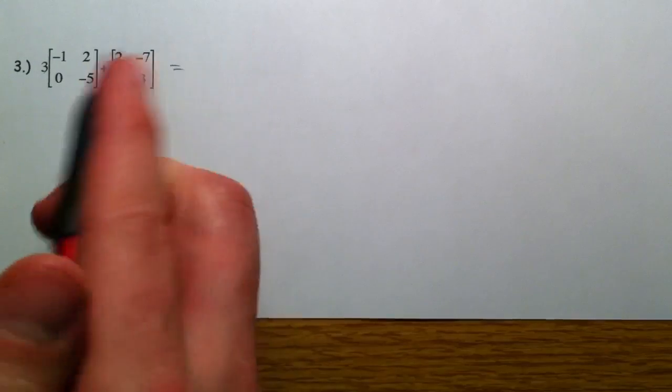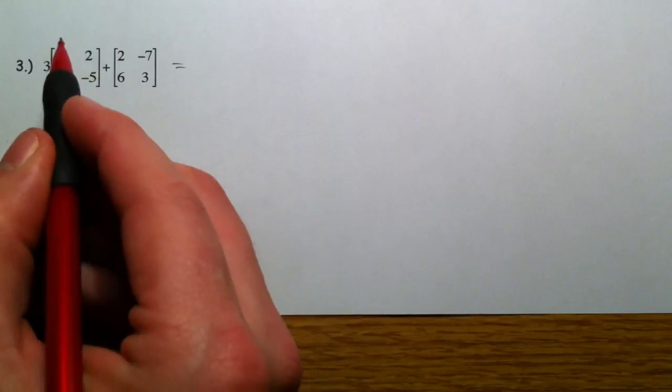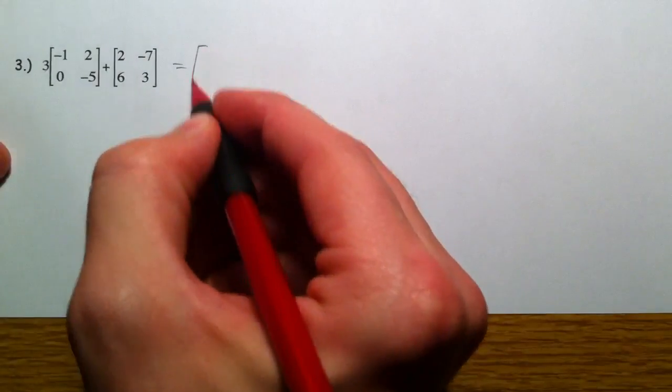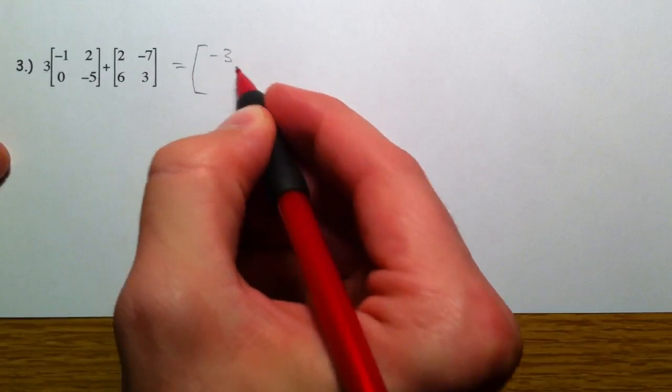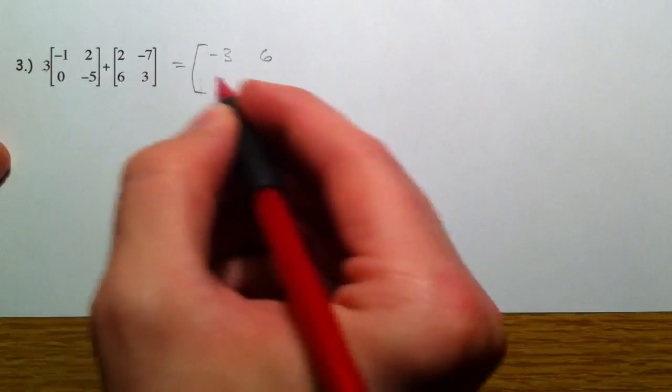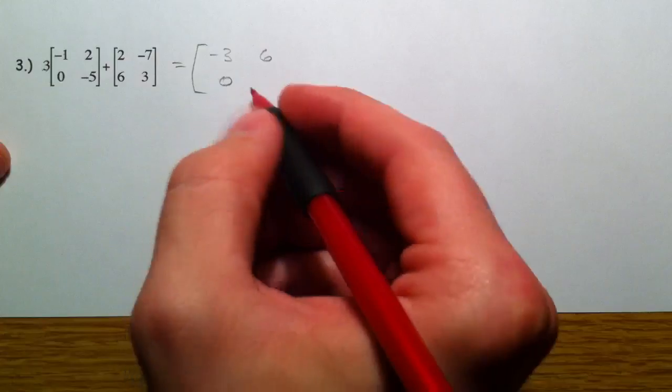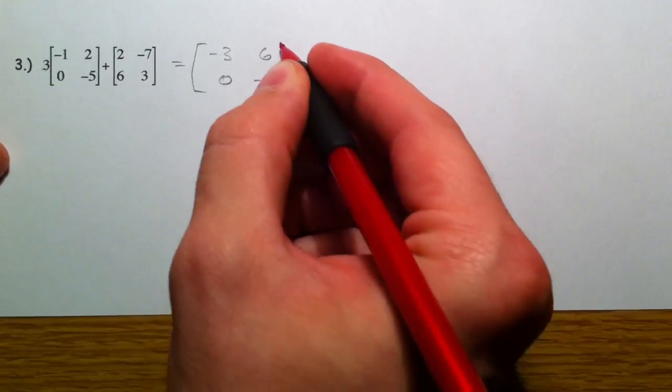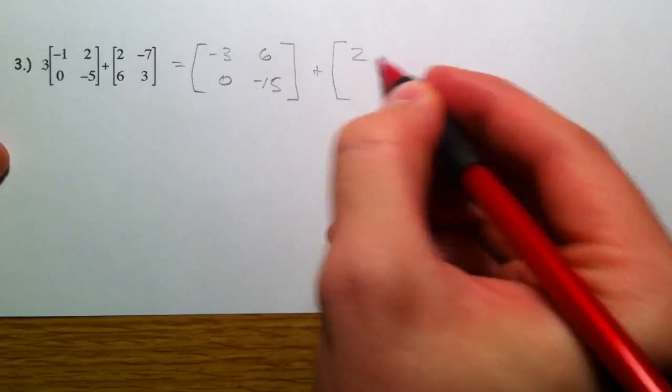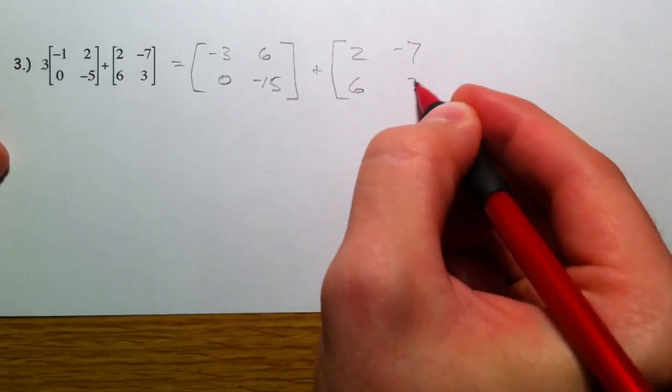So this one, all we have different here is we have a scalar, and then these two added together. Just like with order of operations, you want to take care of the scalar, unless there were parentheses here. I'm going to take care of the scalar first. So we get negative 3, 3 times negative 1, 3 times 2 is 6, 3 times 0, 3 times negative 5. And add to that 2, negative 7, 6, and 3.